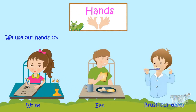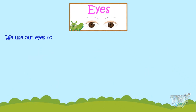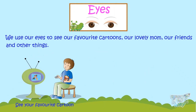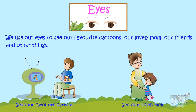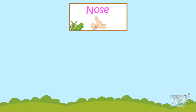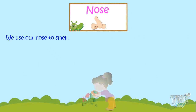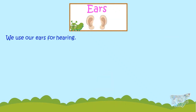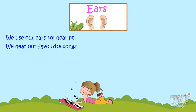We use our eyes to see. You see your favorite cartoon with your eyes. You see your lovely mom, your friends, and everything with your eyes. We use our nose to smell. This flower really smells nice — you can smell it through your nose.